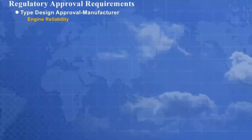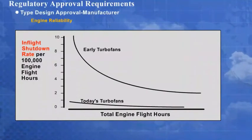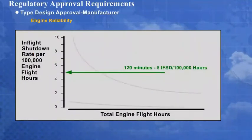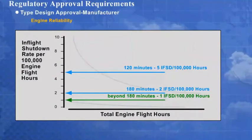Type design approval is based on engine reliability, system design and reliability, and a demonstration flight test program. Engine reliability is measured by in-flight shutdown rate. For an airframe-engine combination to qualify for 120-minute ETOPS type design, most regulatory agencies require less than five shutdowns per 100,000 engine hours of operation fleet-wide. For 180-minute ETOPS, the requirement is less than two in-flight shutdowns per 100,000 engine hours. And for ETOPS type design beyond 180 minutes, the requirement is less than one in-flight shutdown per 100,000 engine hours for the world fleet.